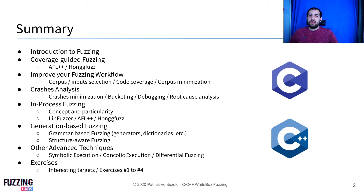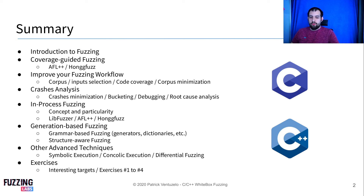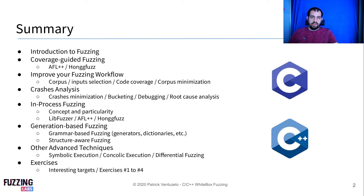Finally, we're going to discuss a bunch of other advanced techniques used in association with fuzzing to find bugs, like symbolic execution, concolic execution, and differential fuzzing — the final technique we'll use in order to find logic bugs, which is the main reason we'll use it.